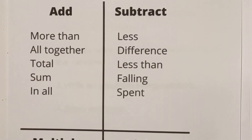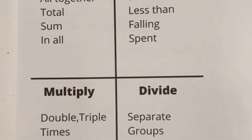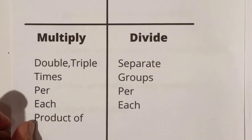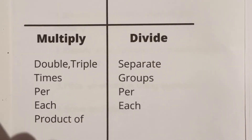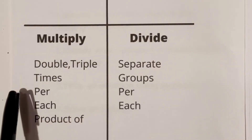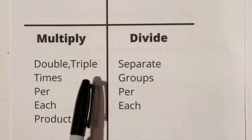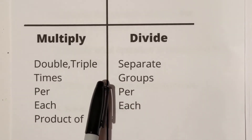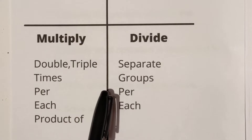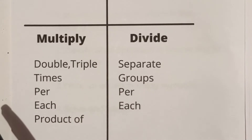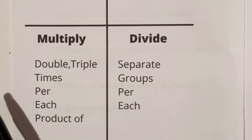And for multiplication, you'll see: double, triple, times, per, each, or product of. And for division: separate, groups, and then per and each. Yes, per and each are used in both — you just have to read the context.